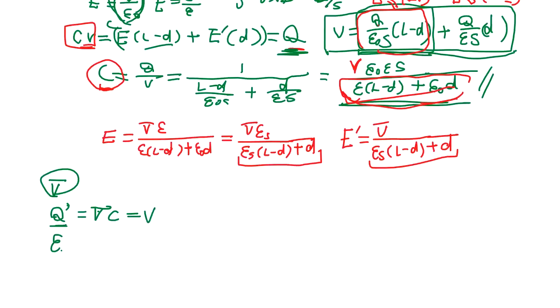So, the V, C is, the Epsilon zero S over L. So, this will be maintained. The, it's different from this Q. Because there's no more supplier of Q. So, what happens is, V, C. So, what happens is, when you insert dielectric material, this drop to V prime.